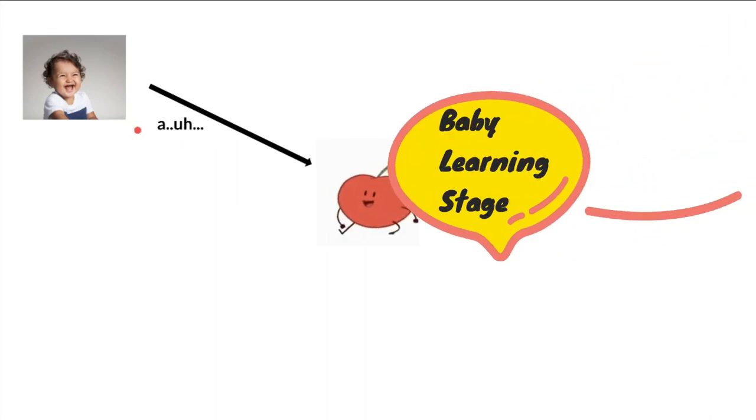That's why I'm getting an output like 'ah' or 'oh'—it's not exactly 'apple.' The challenge here is the baby can see the apple but does not have enough information to process and give me an exact answer. The baby is in the learning stage now.